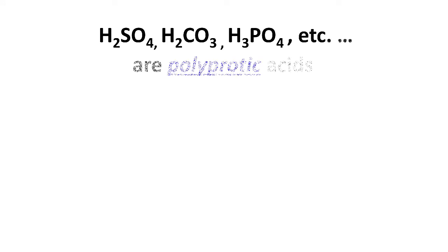First of all, what are polyprotic acids? Well, H2SO4, H2CO3, and H3PO4 are all examples of what are called polyprotic acids. Poly means many, and protic means donates a proton.